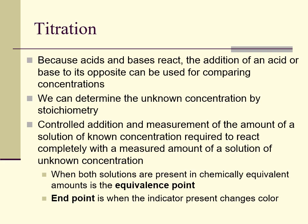Because acids and bases react together, the addition of an acid or a base to its opposite can be used for comparing concentrations. Using this, we can determine the unknown concentration of one substance by stoichiometry. Controlled addition and measurement of the amount of a solution of known concentration, required to react completely with a measured amount of an unknown solution concentration, allows us to use those volumes through stoichiometry and solution calculations to determine the unknown value. When both solutions are present in chemically equivalent amounts, we call that the equivalence point, and the end point is where the indicator will change color.